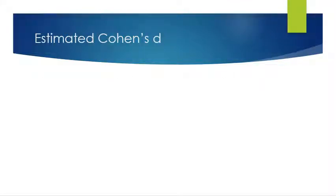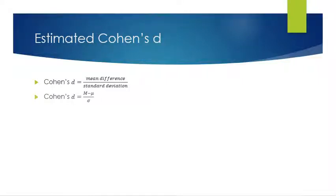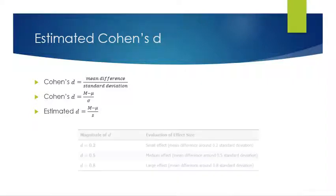Our first effect size measure is Cohen's d. You already know from the last chapters that Cohen's d is equal to the mean difference over standard deviation, calculated as m minus mu over population standard deviation. For this chapter, we're going to estimate d using m minus mu over s, which is the standard deviation for a sample.